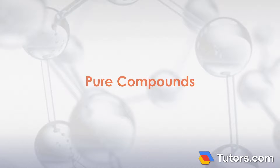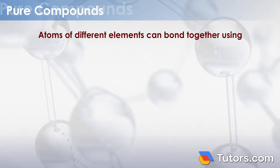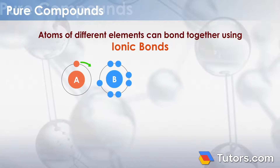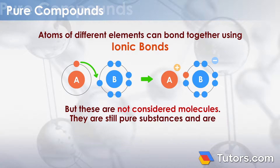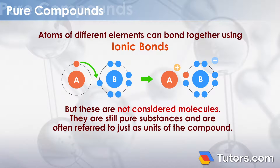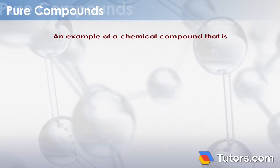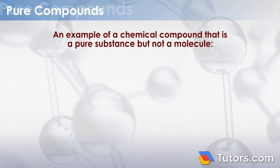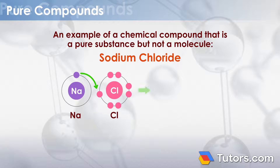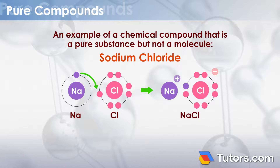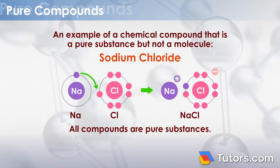Pure Compounds: Atoms of different elements can bond together using ionic bonds, but these are not considered molecules. They are still pure substances and are often referred to just as units of the compound. An example of a chemical compound that is a pure substance but not a molecule is sodium chloride, or table salt. Here is the chemical formula for sodium chloride. All compounds are pure substances.